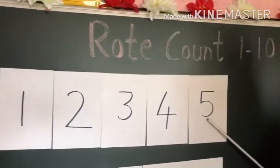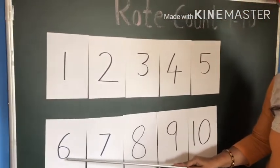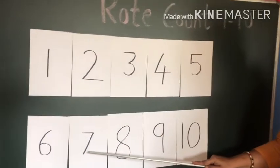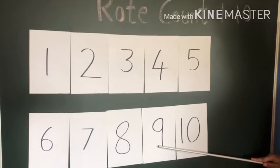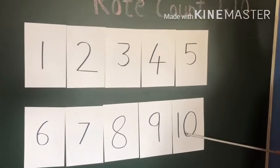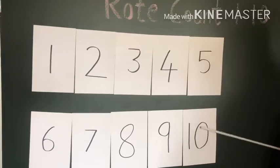Again, what comes after 5? 6, 6, 7, 8, 9, 10, 10. 1, 0, 10, ok.